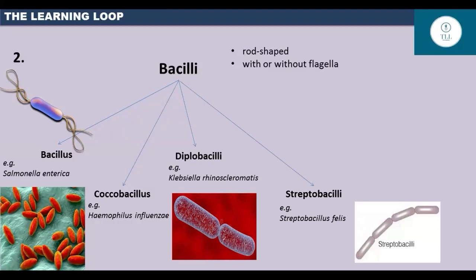Streptobacilli, similar to streptococcus, divides in one plane and forms a chain-like arrangement. They are also pathogenic. For example, streptobacillus palis causes rat bite fever.